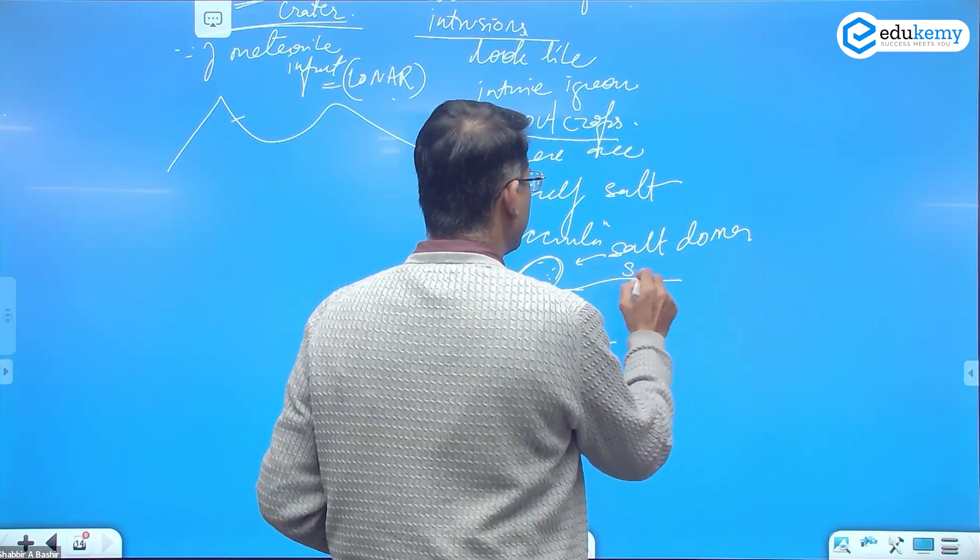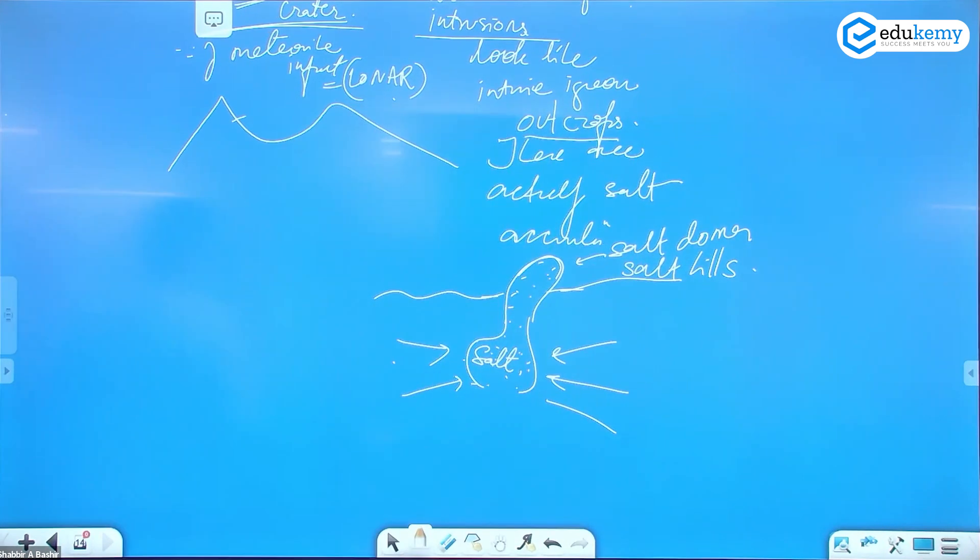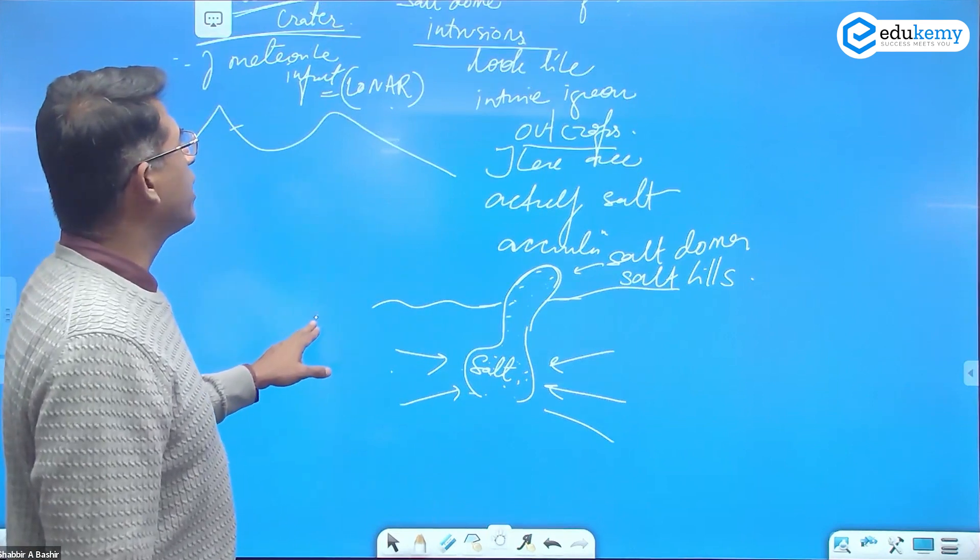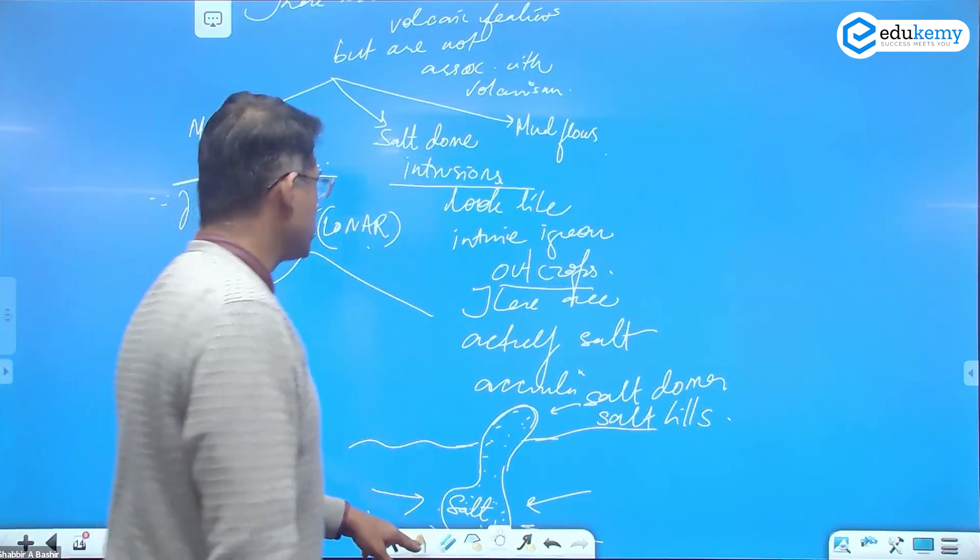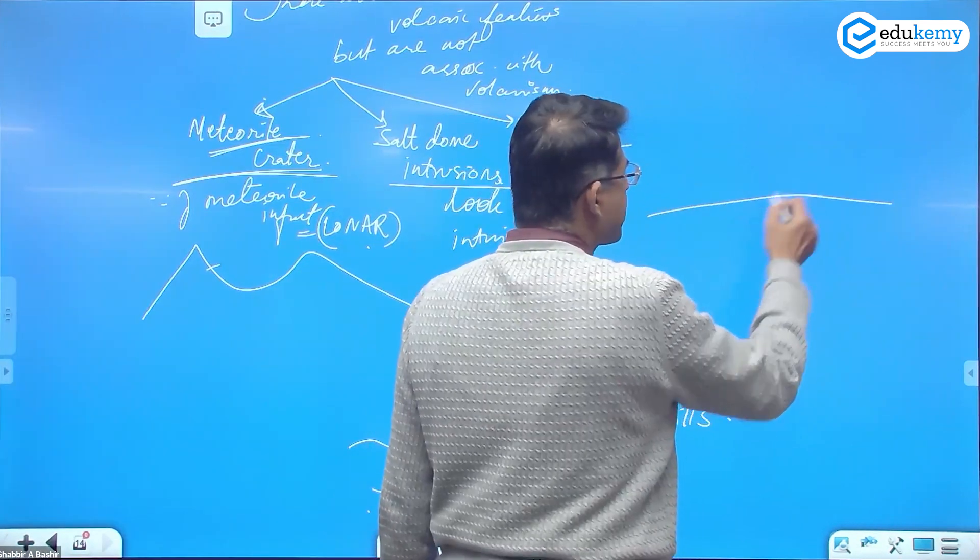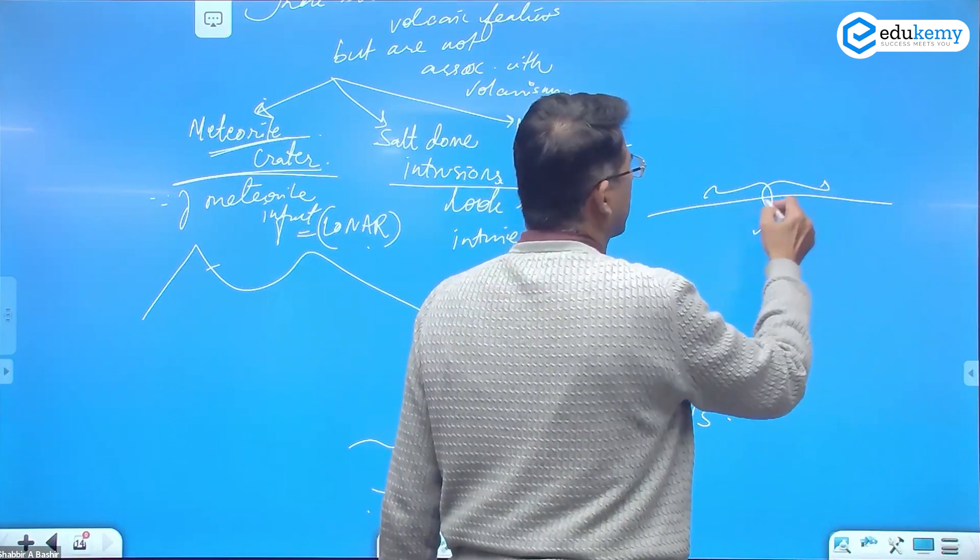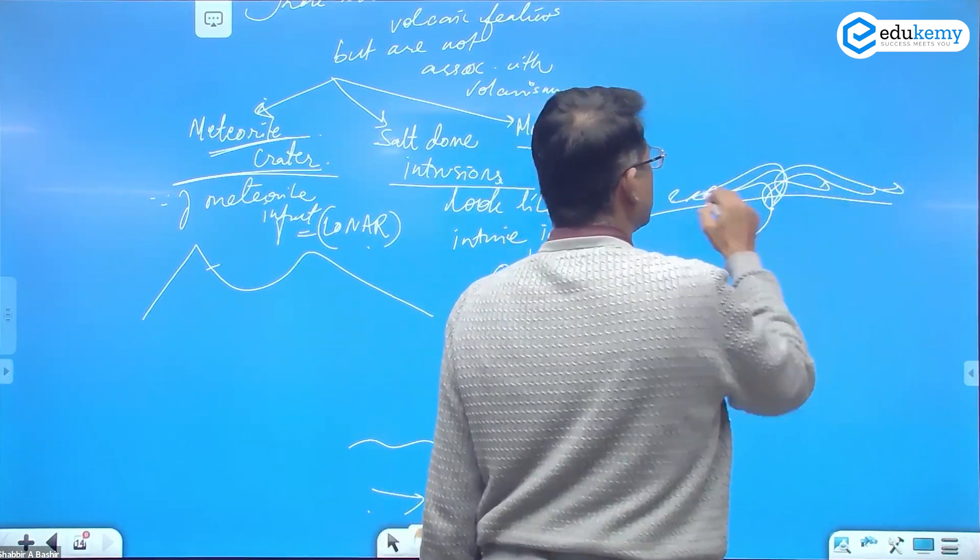So some compression operates here and this salt is pushed outwards. So these become salt domes, these become salt hills. Okay, salt intrusions. These are not igneous. And the third one is mud flows.